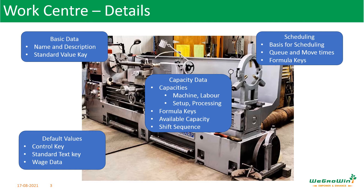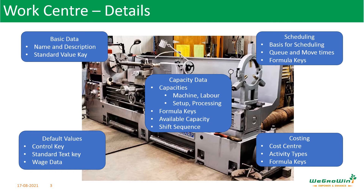Then we have a scheduling screen. The scheduling screen controls how to use the scheduling for the available capacity and how to do the scheduling. One capacity from each capacity screen can be set as the basis for scheduling, which is the bottleneck capacity we can define. And then we have the link to work center with the cost centers, where we define in the work center the activity types.